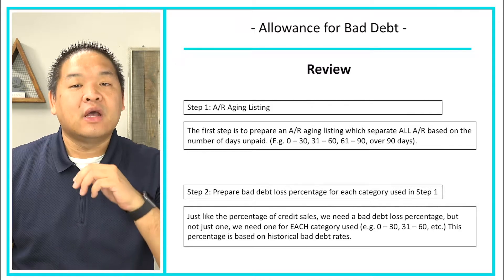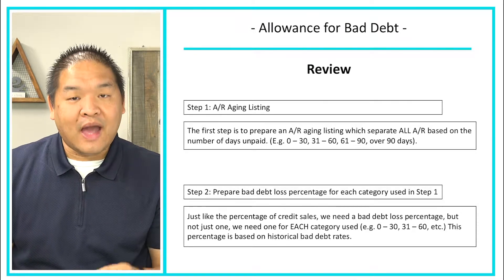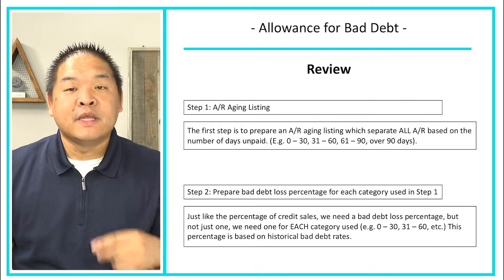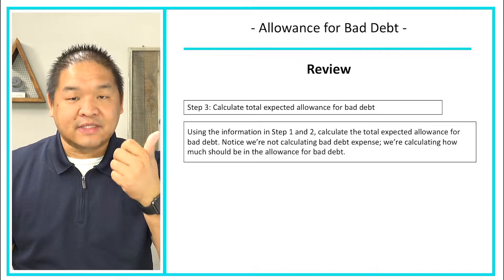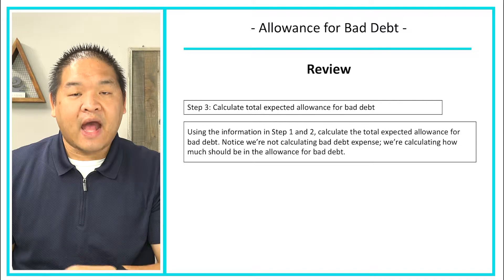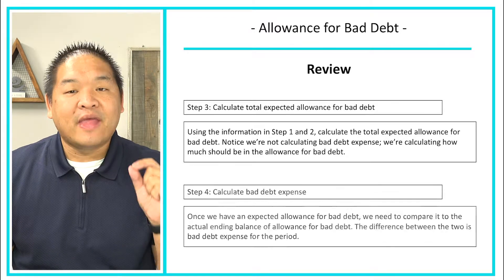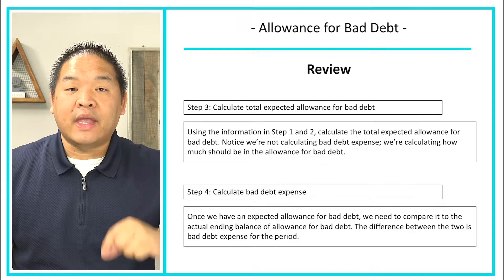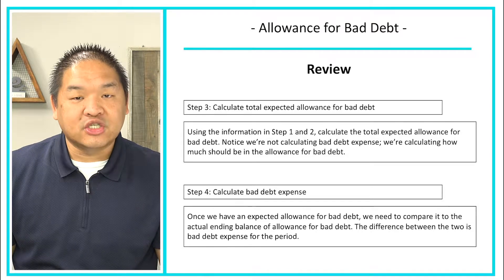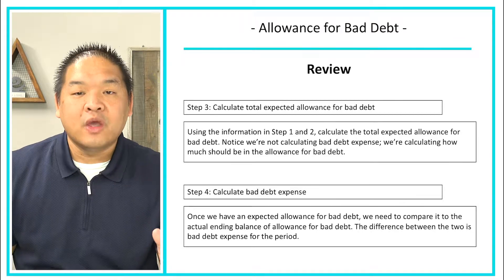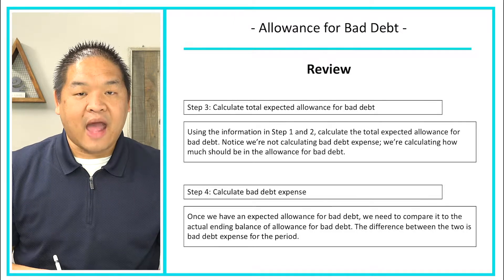The percentages are going to be given to us — we may need to calculate each one, but for this case we actually have each one of them. In step number three, we're going to calculate the total expected allowance for bad debt using the information from steps one and two. Once we have the allowance for bad debt, there's still one more step: we're going to calculate the bad debt expense by comparing what our allowance is right now to what it should be, with the difference being the bad debt expense and the associated journal entry.